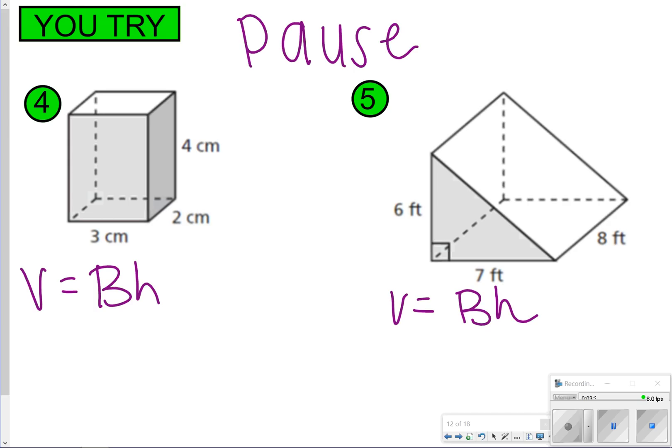All right, so for both of these, you're finding area of the base times the height. For number 4, the base was a 3 by 2 rectangle, and the height was 4, so I'm going to multiply 3 times 2, which is 6, and then 6 times 4 gives me 24 centimeters cubed.